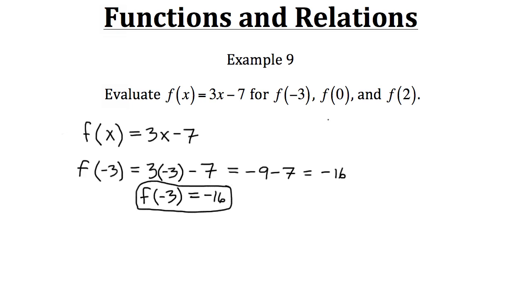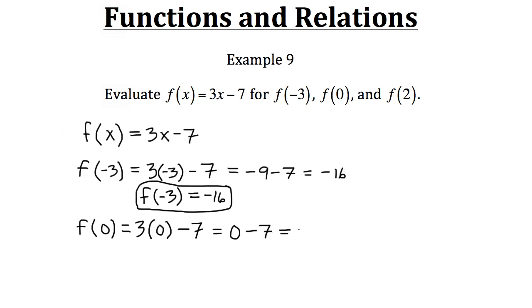Now we'll do the same thing, but with an input of 0. We plug 0 in for x and do the order of operations. First, 3 times 0 is 0, then minus 7. So 0 minus 7 leaves us with negative 7. When we evaluate our function for an input of 0, we get an output of negative 7.